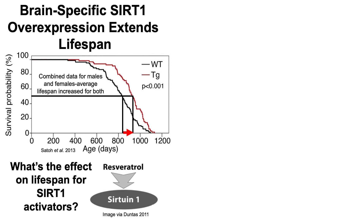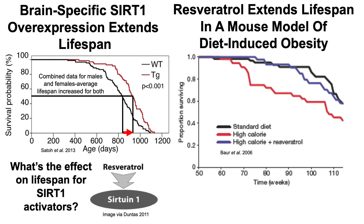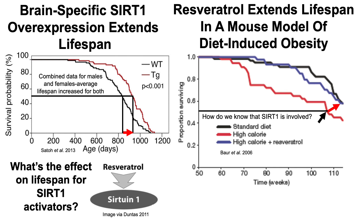One way to apply this to people is with SIRT1 activators. The most popular SIRT1 activator is resveratrol, which was initially shown to extend average lifespan 15 years ago. Mice fed a high calorie diet given resveratrol showed extended lifespan compared with animals on the high calorie diet without resveratrol. The obvious question is: how do we know SIRT1 is involved?